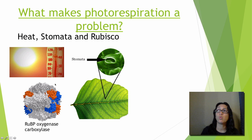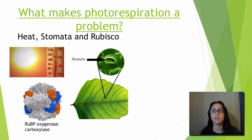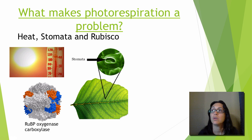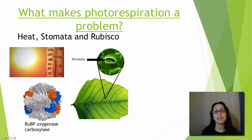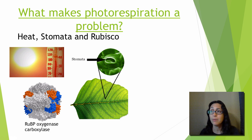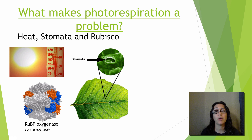What causes photorespiration? It has to do with heat, stomata, and the Rubisco enzyme. Stomata are holes in the leaves that allow carbon dioxide to go in and oxygen to exit. During the day the stomata are open; at night stomata close. The reason has to do with the light-dependent reactions — the Calvin cycle cannot happen unless the light-dependent reactions happen.